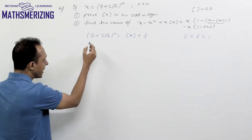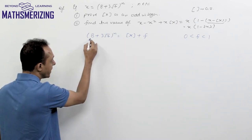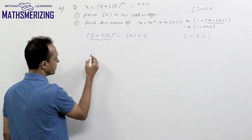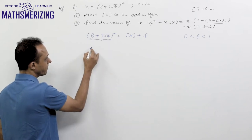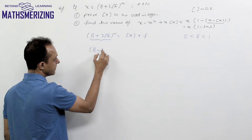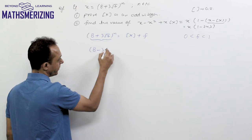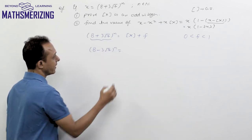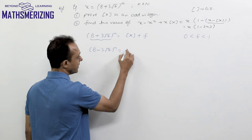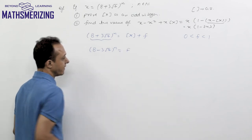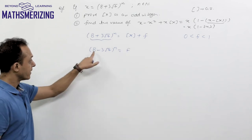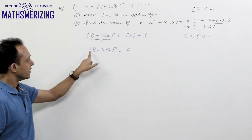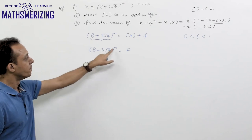We now take another binomial expression which is the conjugate of the given expression: (8 − 3√7)^n, and we call this value capital F. We must ensure that when taking this conjugate, the value of (8 − 3√7)^n always lies between 0 and 1.